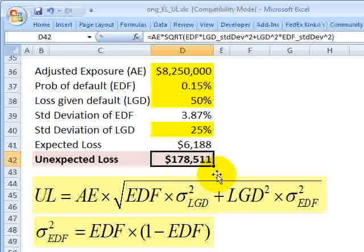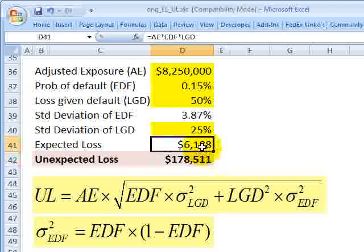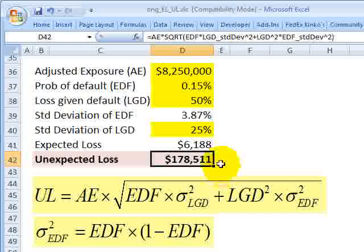And that's my unexpected loss, my one standard deviation dispersion of my estimate of potential loss in value around the expected loss. And you can see it's quite a bit of difference here. And it's a function of all of these inputs, especially the standard deviation of my expected default frequency and loss given default.